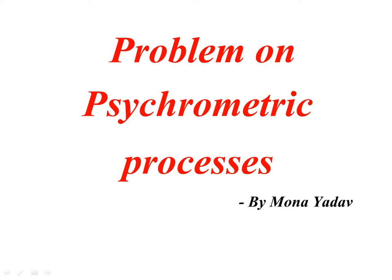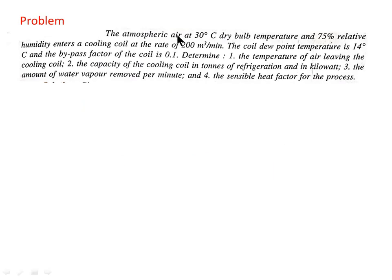Hello and welcome everyone. My name is Munay Adav and in this video we are going to solve one problem based on psychrometric processes. The problem is given as: atmospheric air at 30°C dry bulb temperature and 75% relative humidity enters a cooling coil at the rate of 200 m³/min. The coil dew point temperature is 14°C and the bypass factor of the coil is 0.1. Determine: first, the temperature of air leaving the cooling coil; second, the capacity of the cooling coil in tons of refrigeration and in kilowatt; third, the amount of water vapor removed per minute; and fourth, the sensible heat factor for the process.